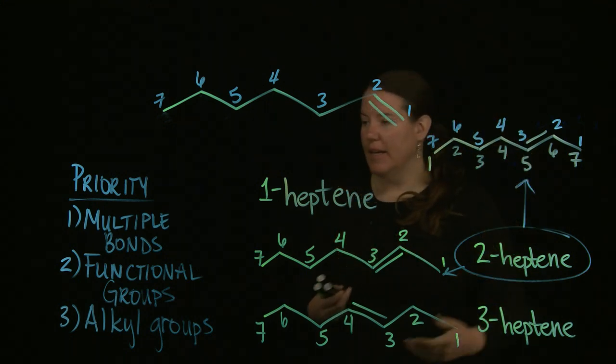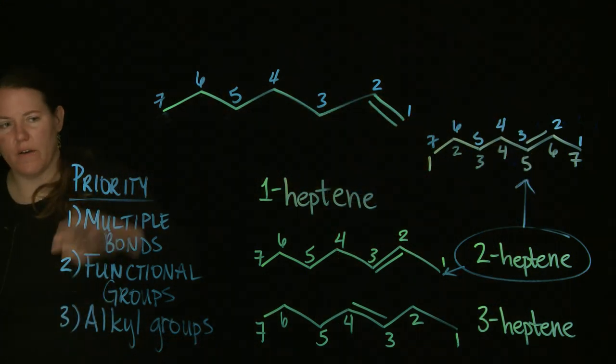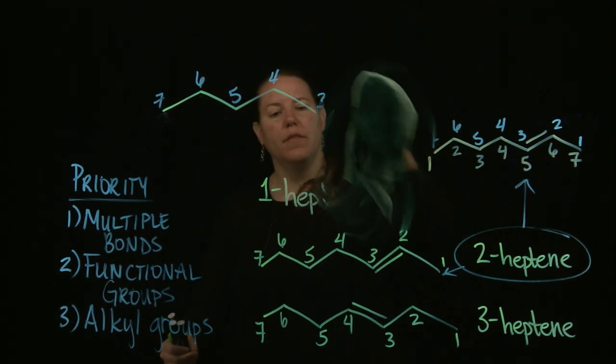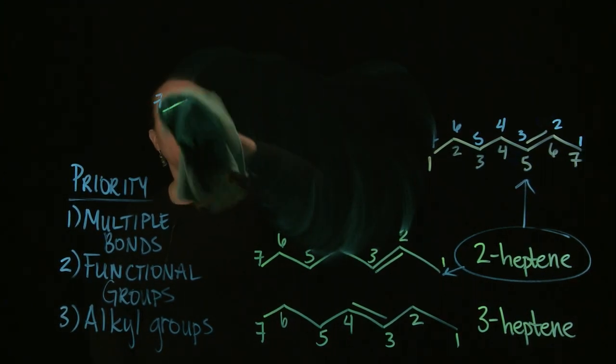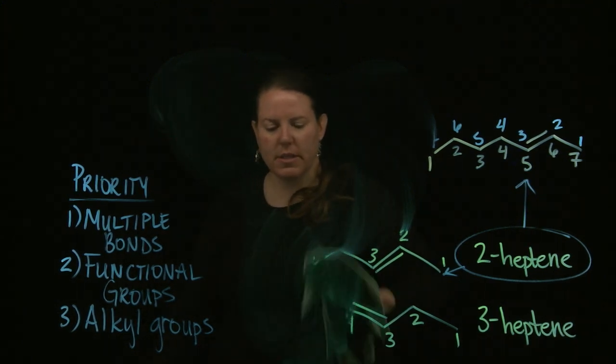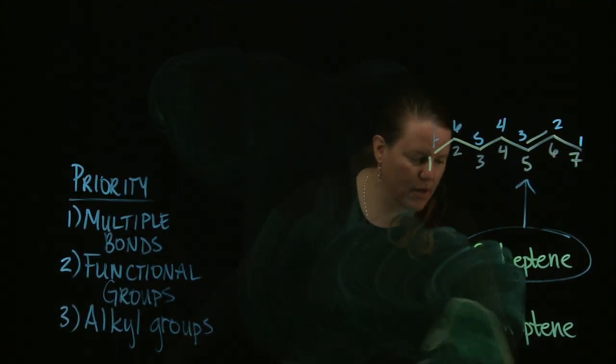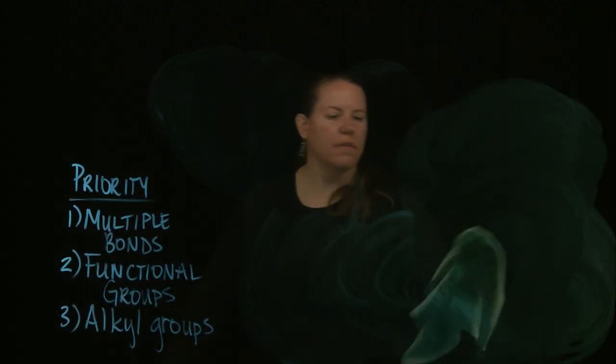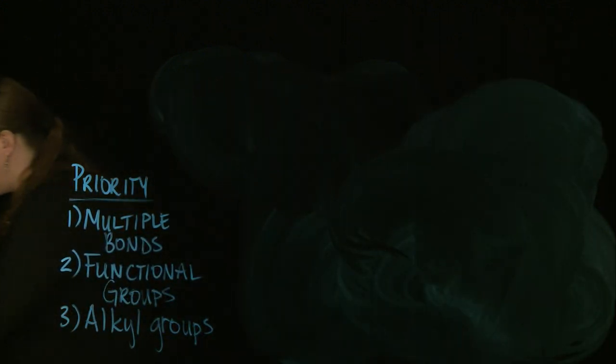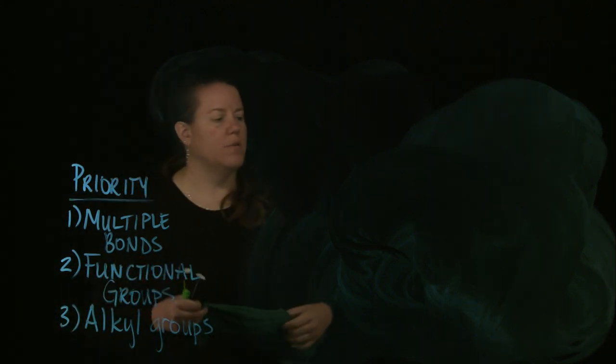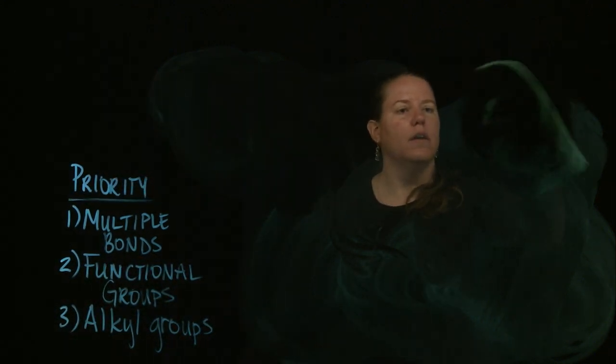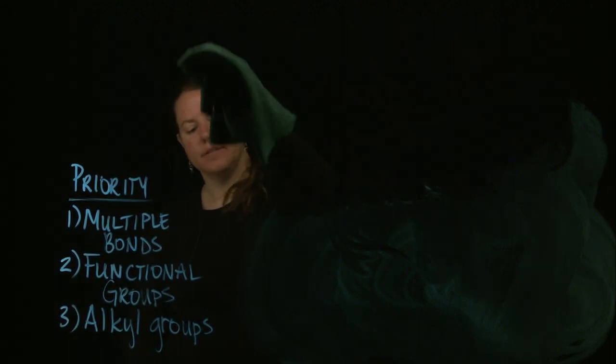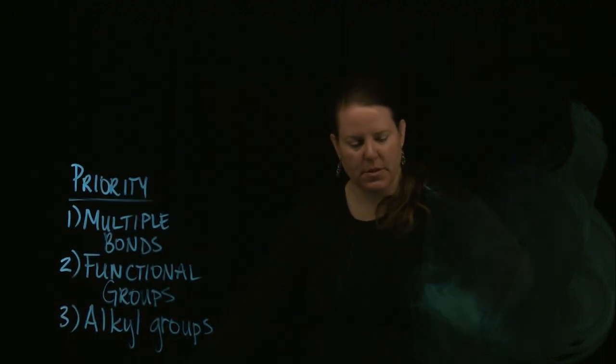With alkynes, exact same deal. You're going to have priority. You're going to start the numbering by the triple bond, and you are going to number the longest continuous carbon chain, look up the stem, and then add an ending that would be indicative of the fact that it has a triple bond, which means that it would belong to the major subclass alkynes.